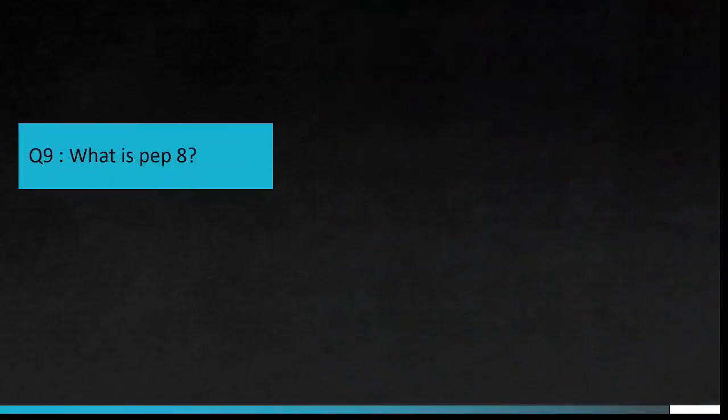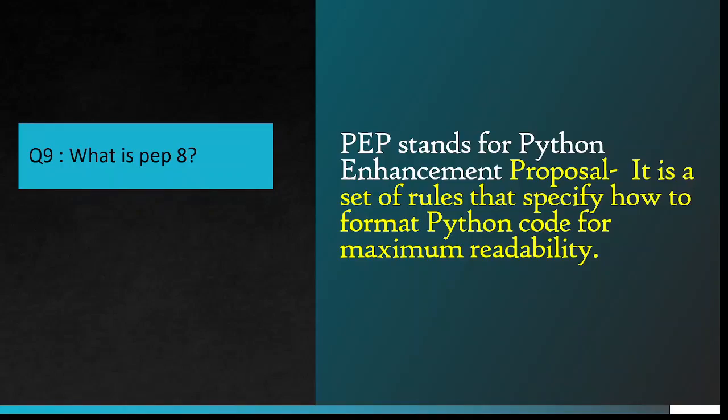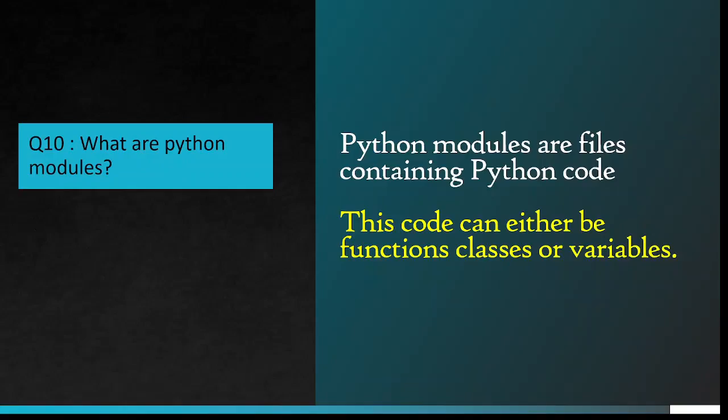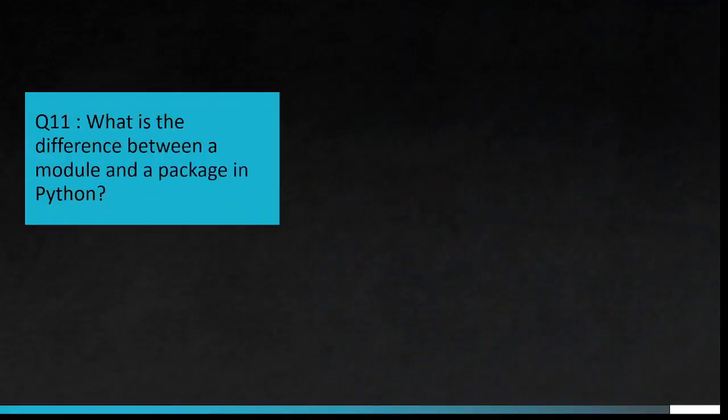Question number 9: What is PEP 8? PEP stands for Python Enhancement Proposal. It is a set of rules that specify how to format Python code for maximum readability. Question number 10: What are Python modules? Python modules are files containing Python code. This code can either be functions, classes, or variables.